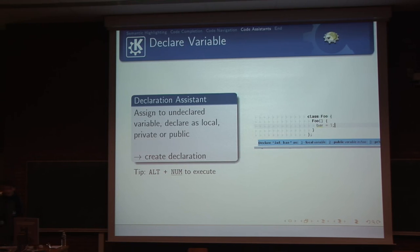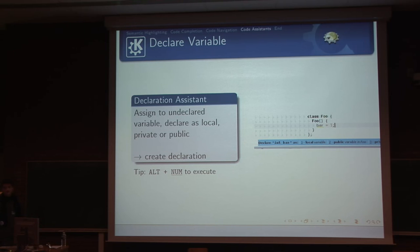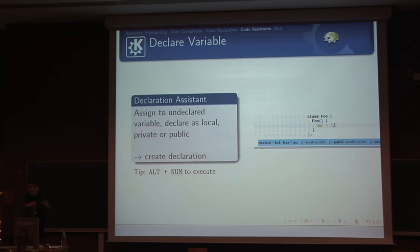There's a declaration assistant — you can write an expression without types and it offers to declare it as a local variable, adding the type automatically. You can also declare it as a public variable in the class, and if you do that in the CPP file, it will automatically add it to the header. This is very useful when working with iterators — you don't want to remember the long type. Just write 'it = list.constBegin()', hit Alt+1, and the type is added in front.